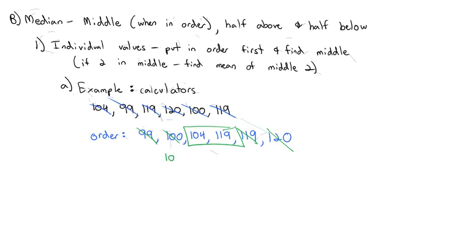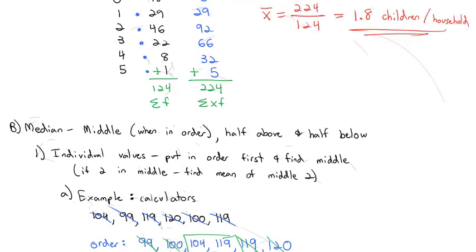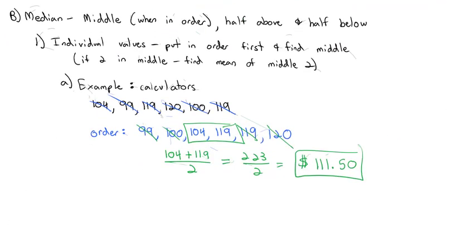So we fix that by finding the mean of the two middle values, adding them together and dividing by 2. To avoid a calculator error, we're going to add first to get 223. And when I divide by 2, we get our center value, the median, of $111.50. Notice this median is a little bit higher than the mean, which was $110. It's because we're using a different definition of center, but it still gets us around the middle of the data. This is the physical center as opposed to the center in terms of value.